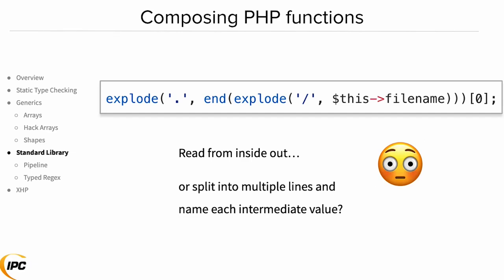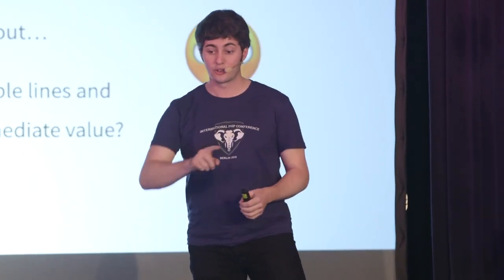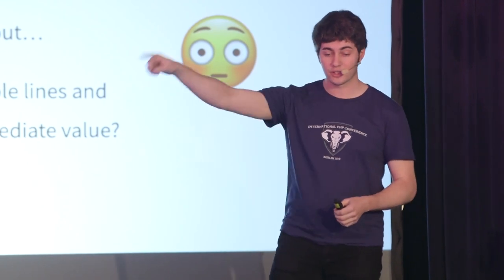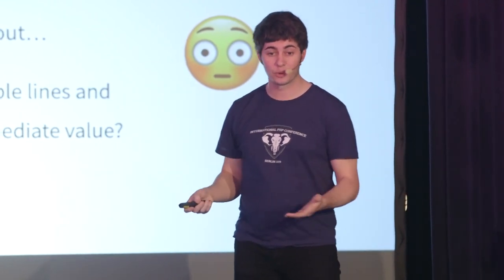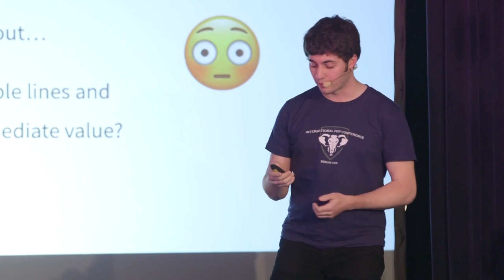There's another problem I often see with PHP code: when you're calling a bunch of functions and composing them together, it's very hard to read. If you want to read this code you have to start in the middle — we have a file name, we're exploding it on slashes, going to the end of that, getting the last result, exploding that on dots, and keying into it to get the first element. Your eye has to jump all the way across to see that we're keying into it. It's really easy to misread this or not understand what type of data will come out, and it's not super easy to refactor in a readable way.